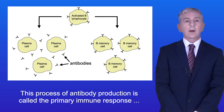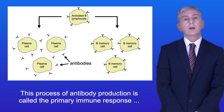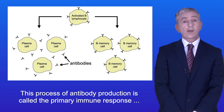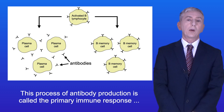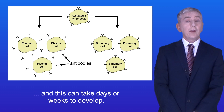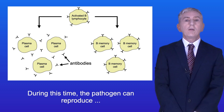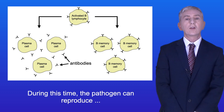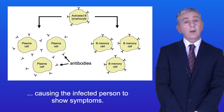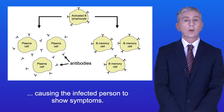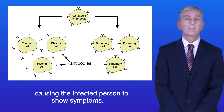This process of antibody production is called the primary immune response, and this can take days or weeks to develop. During this time, the pathogen can reproduce, causing the infected person to show symptoms.